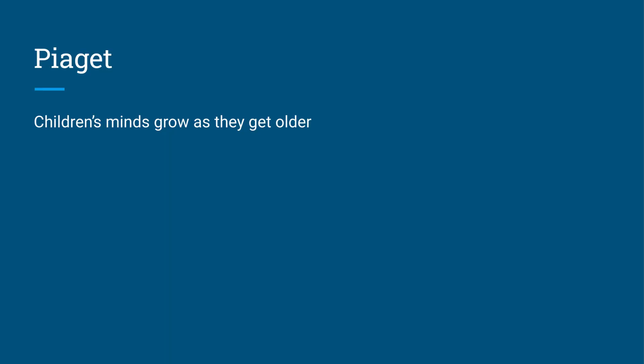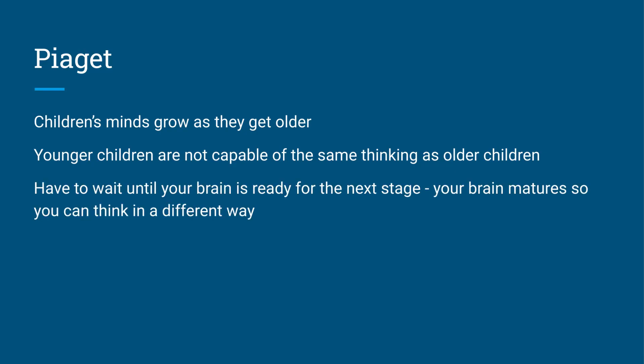Piaget said that children's minds grow as they get older, and younger children aren't capable of the same thinking as older children. You have to wait until your brain is ready for the next stage. Your brain matures as you get older and allows you to think in different ways.